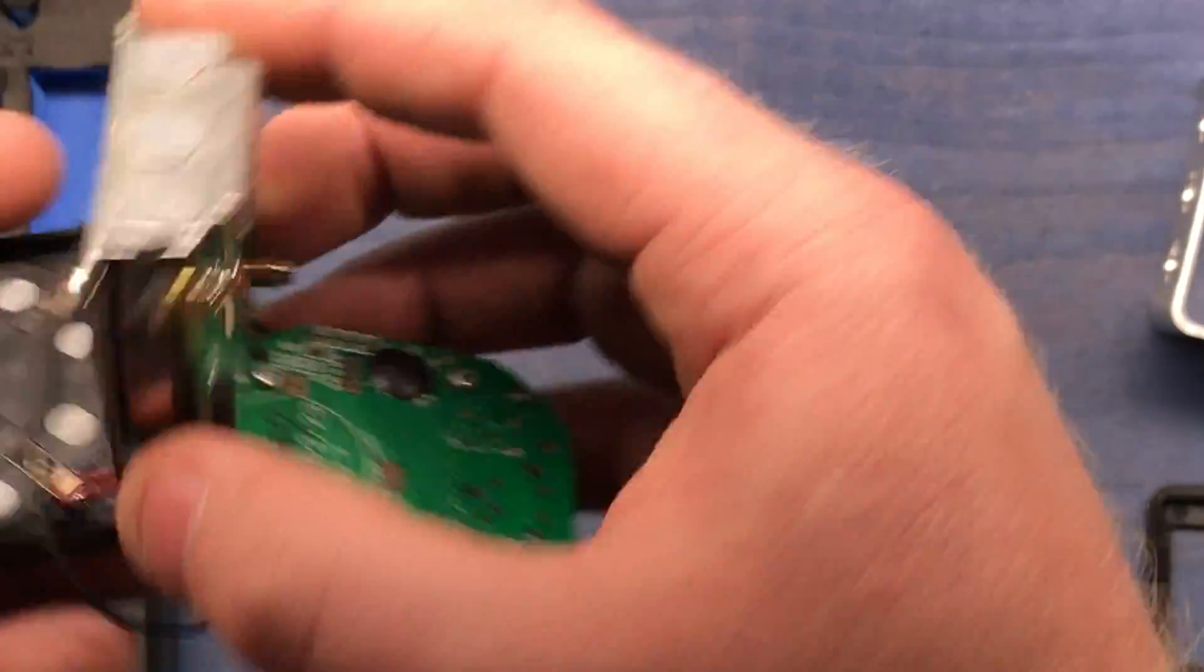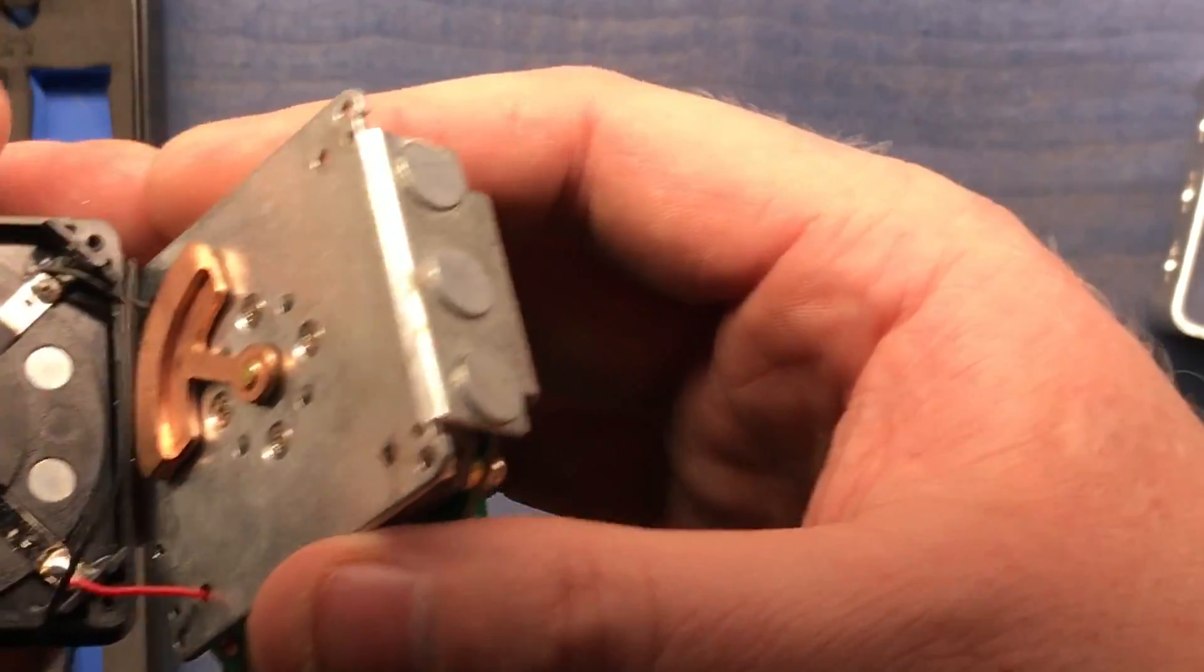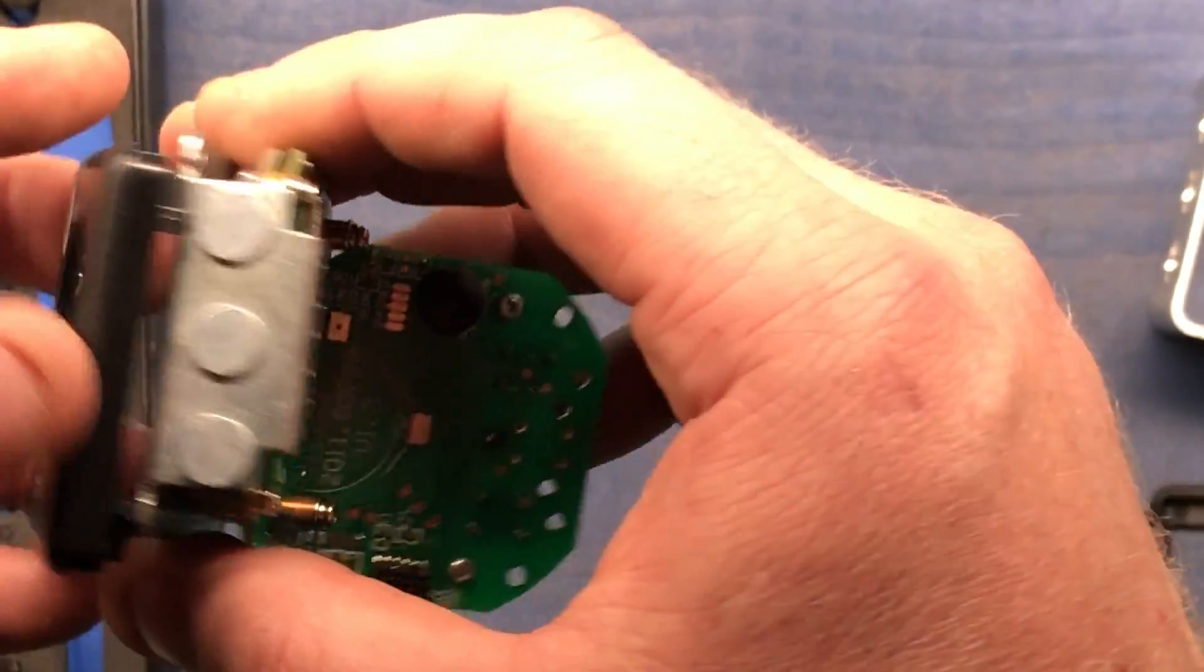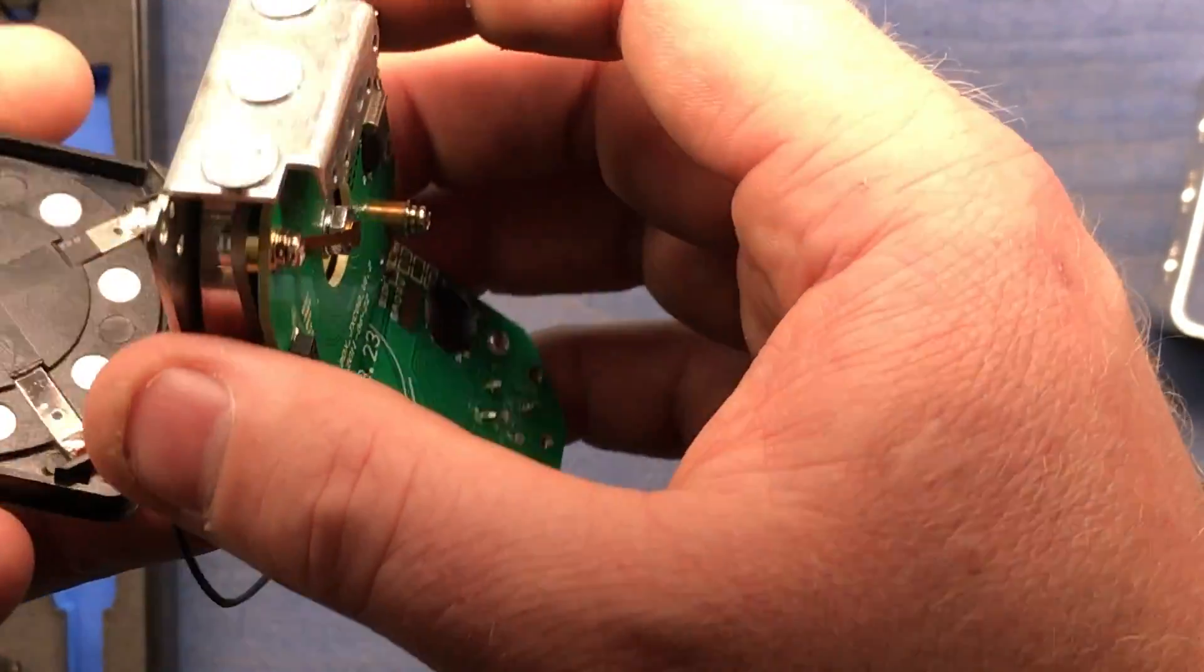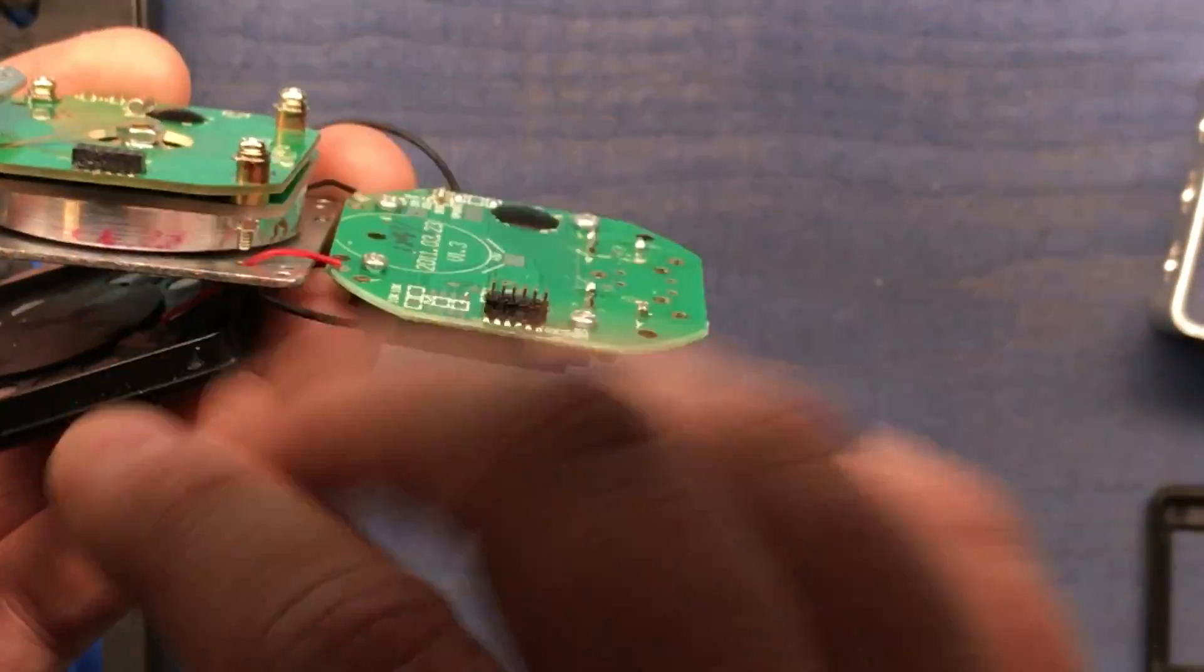And so capacitive rotary encoders are pretty high resolution, and they work pretty well. But the downside is that they are pretty dependent on moisture. So if any moisture gets in here, humidity, your readings are going to be affected.